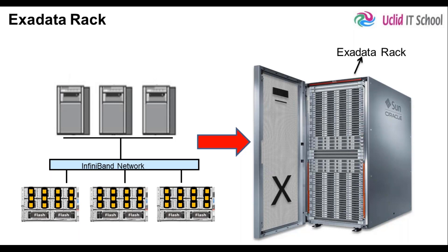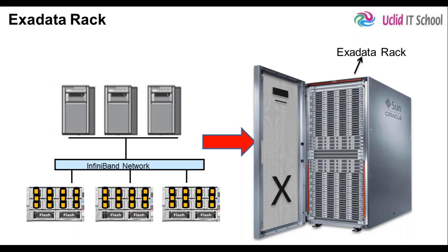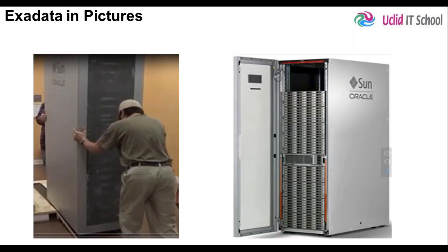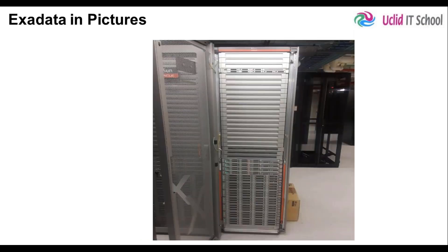Exadata is available and shipped in rack format. All the components that make up Exadata are arranged into the rack. This is how an Exadata rack looks — it is a very tall unit, and in data center terminology it is called a 42-unit rack. All components are nicely arranged, organized, and configured by Oracle, pre-installed, so you just purchase it. This is the front view with the door open, showing all the components inside.